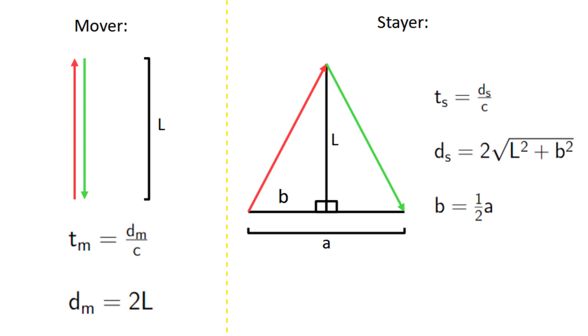The ship travels at velocity v, and since distance is velocity times time, this gives us a equals ts times v. Keep in mind that we're using ts, because this is from the stayer's reference frame.